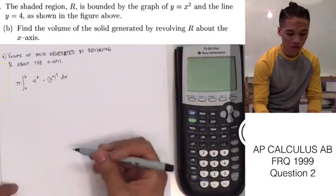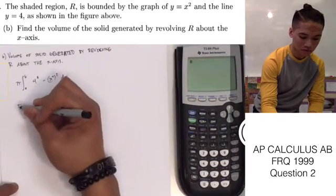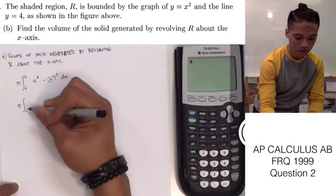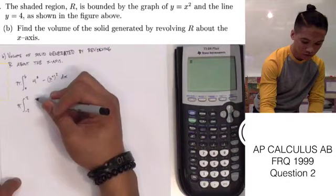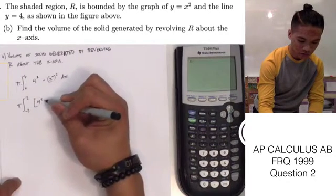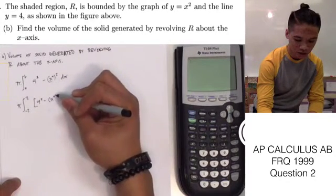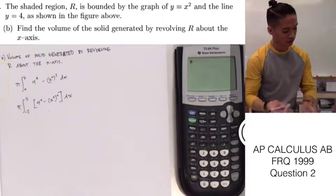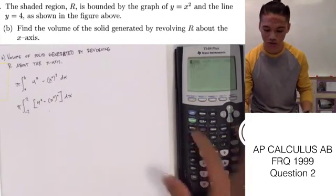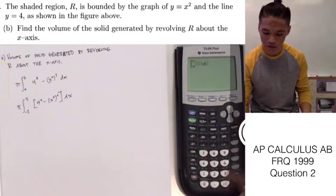We know our values of A and B, so we can go ahead and plug those in. It's from negative 2 to positive 2 of 4 squared minus x squared squared dx.